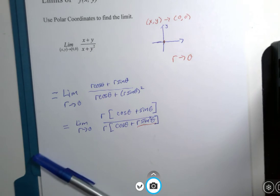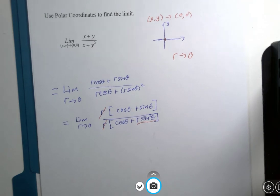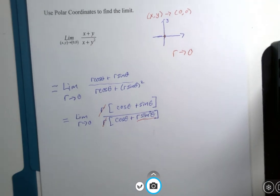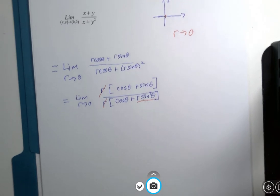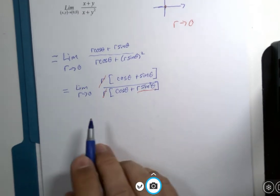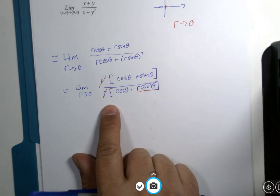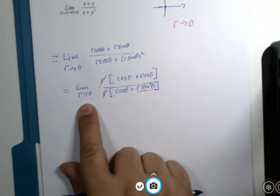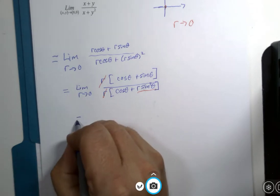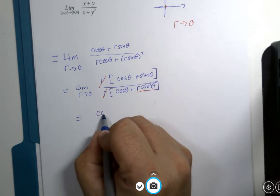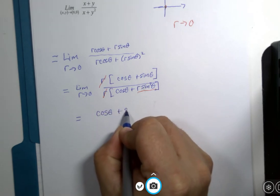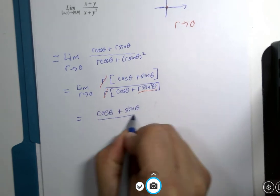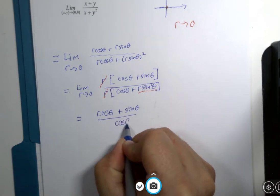And I must not neglect to reduce the fraction. If we were in an algebra or even a trigonometry class, I would not jump through multiple steps at the same time algebraically. But I am interested in showing you that once r becomes zero, we are left with the following fraction: cosine of theta plus sine of theta divided by cosine of theta.